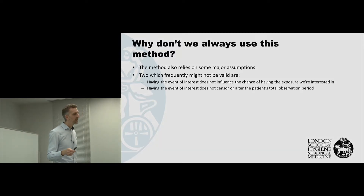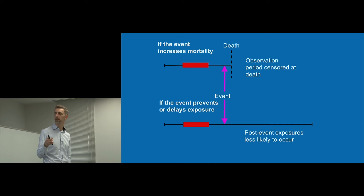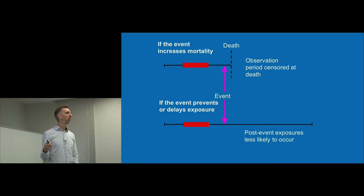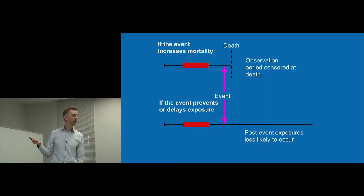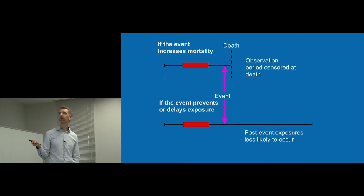The second major assumption is that having the outcome of interest doesn't affect the end of the observation period. Here's how this looks on a timeline: the first case is if the event increases the risk of mortality. Death itself would be a good example, or something like a stroke where the risk of dying shortly after is quite high. It means we can't observe what would have happened if the patient hadn't died, and this can lead to a biased result. We ought to avoid the design if we think there's a high chance that it increases mortality.